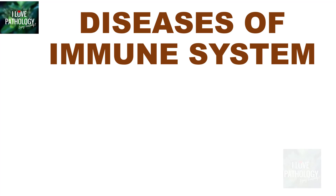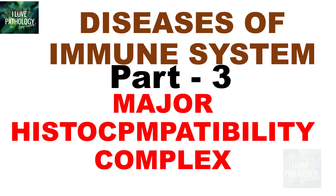Hi everyone, welcome back to this short tutorial from Pathology Made Simple at ilowpathology.com. This is part 3 of the Diseases of Immune System series. In the first two parts we discussed general basic concepts of immunity — innate immunity and adaptive immunity — and the various cells involved in each. Continuing with the basics of immunity, in this session let's learn in detail about major histocompatibility complex.